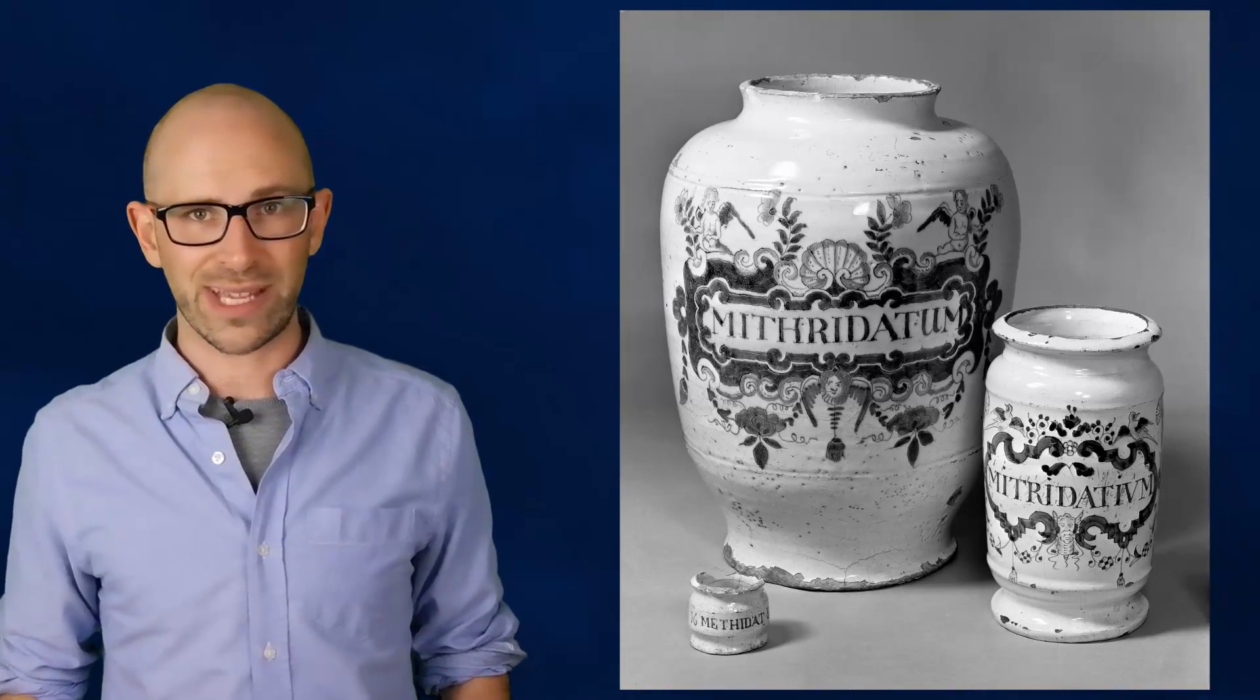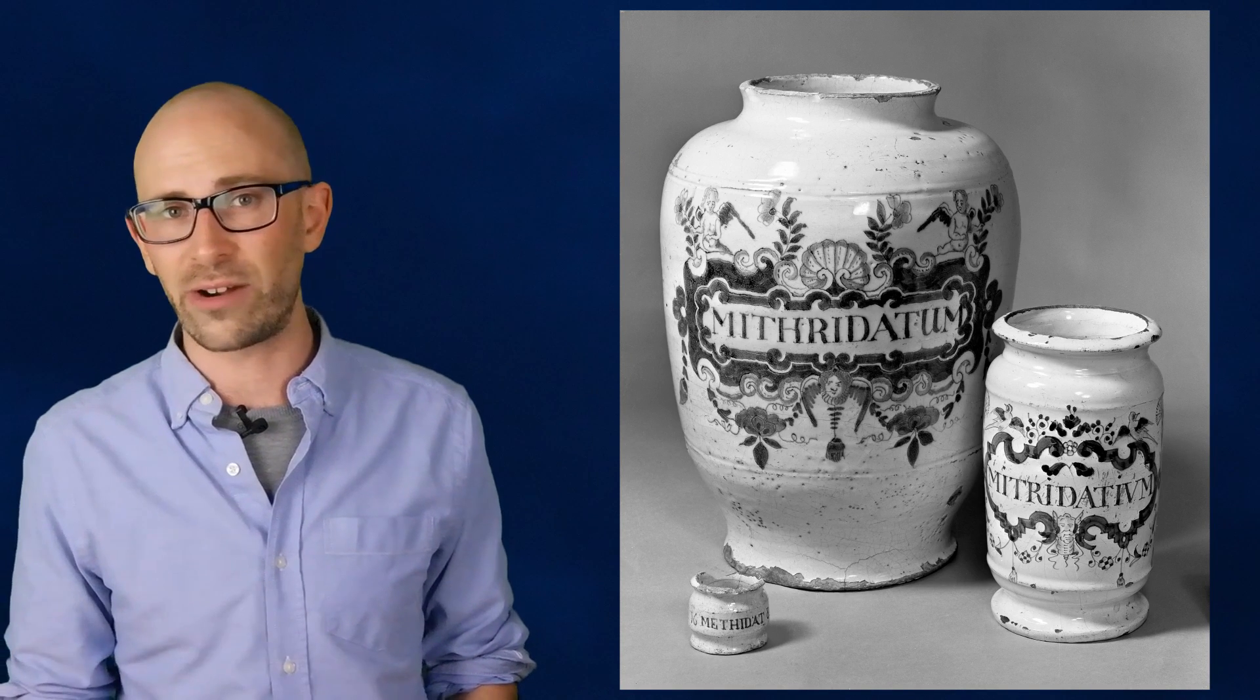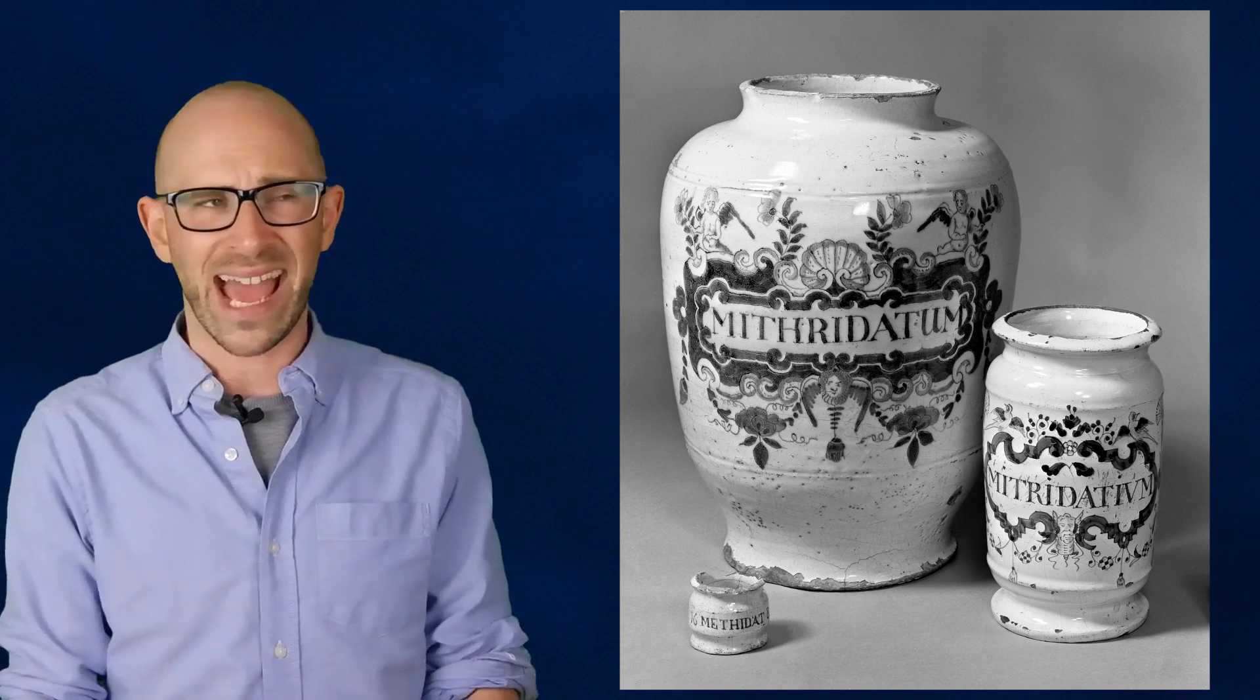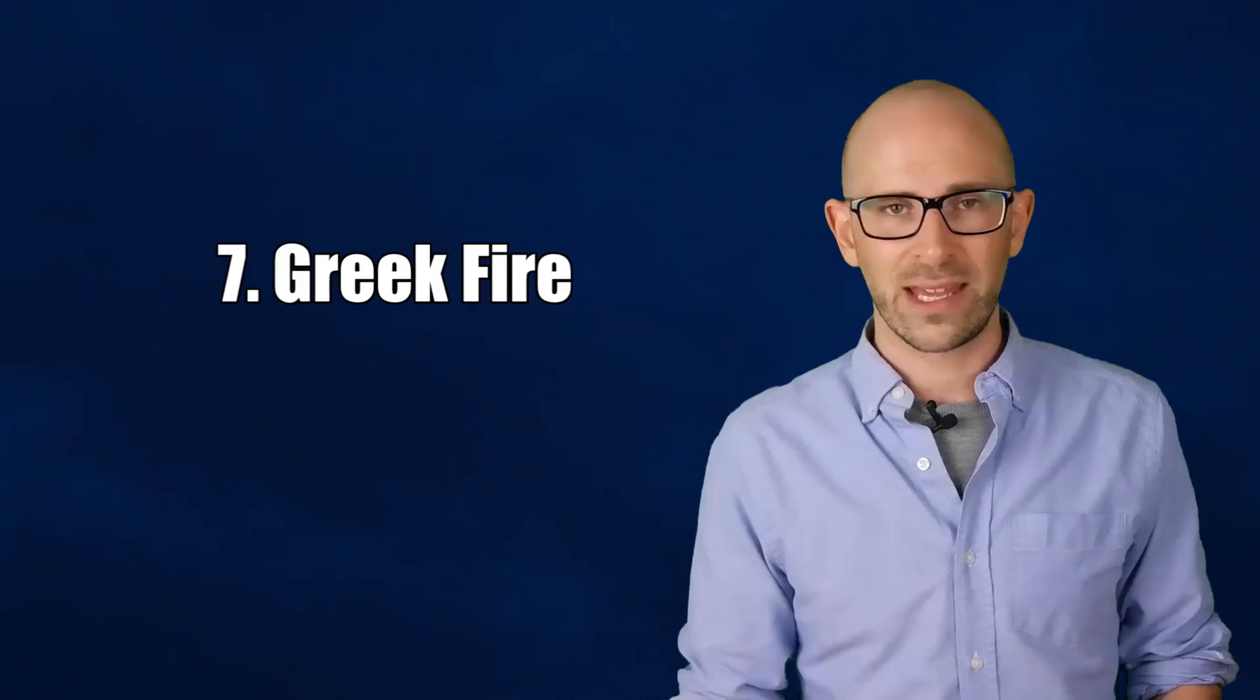Some say that among the 36 ingredients found in this universal antidote were opium, small quantities of various poisons and their antidotes, and even chopped vipers.